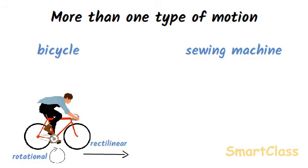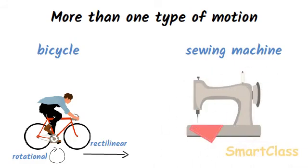Sieving Machine. The sieving machine has a wheel which rotates on an axle. So, the wheel of a sieving machine shows rotational motion. The sieving machine also has a needle which moves up and down continuously. The needle of a sieving machine undergoes a periodic motion. In this way, sieving machine has two types of motions at the same time.